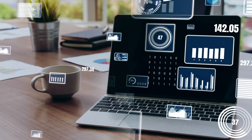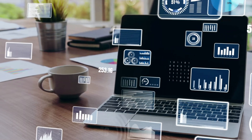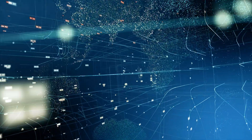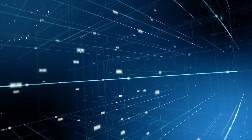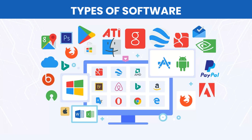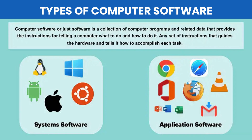Computer software refers to a collection of programs, data, and instructions that tell a computer how to perform specific tasks or functions. Software is a critical component of modern computing and enables computers to perform a wide range of tasks, from word processing and web browsing to complex scientific simulations and video games.